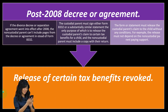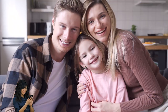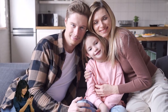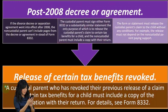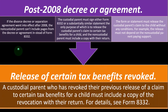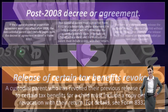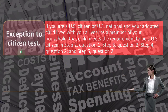The form or statement must release the custodial parent's claim to the child without any conditions. For example, the release must not depend on the non-custodial parent paying support. Release of certain tax benefits revoked: a custodial parent who has revoked their previous release of a claim to certain tax benefits for a child must include a copy of the revocation with their return. For details, see Form 8332.